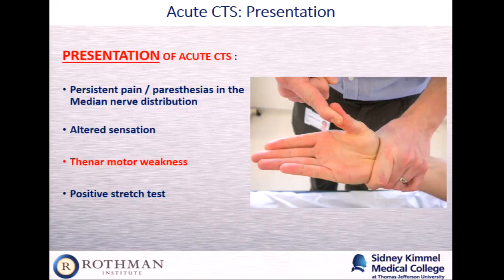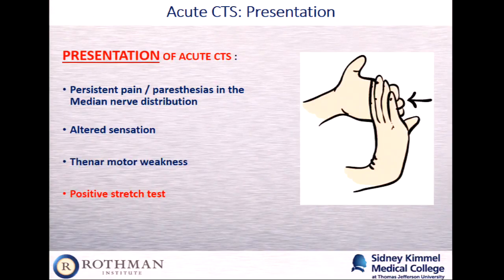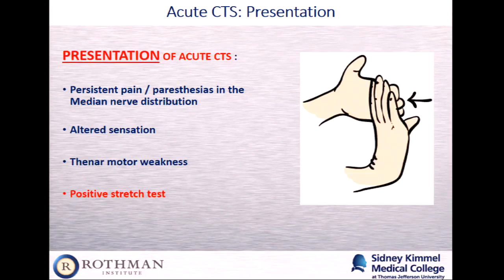Another way to test for acute CTS is thenar motor weakness — specifically, weakness to thenar abduction, bringing the thumb up in the palm and testing that strength. However, in an acute setting with a distal radius fracture, this is a very hard test to perform, since you'd be grabbing someone with a broken wrist. The positive stretch test — pulling the fingers back, somewhat analogous to a leg compartment syndrome — may also elicit symptoms, but again is not particularly useful in a fracture setting because the entire area already hurts significantly.